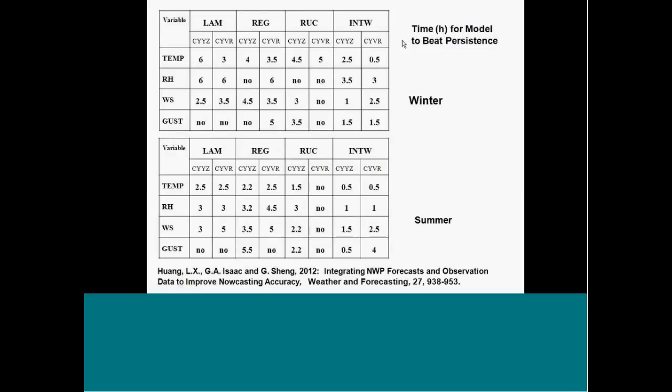The time for the model to beat persistence is given in this chart. So, for example, the LAM for Toronto for temperature, it took six hours before the LAM beat persistence. And for the INTW, which used both the LAM, the regional, and the RUC, it took two and a half hours before it beat persistence. And the top chart is for the winter, the bottom chart is for the summer. And you can see, if you look at this, basically the integrated system, nowcasting system, was beating the models in terms of when it reached the crossover point for persistence.